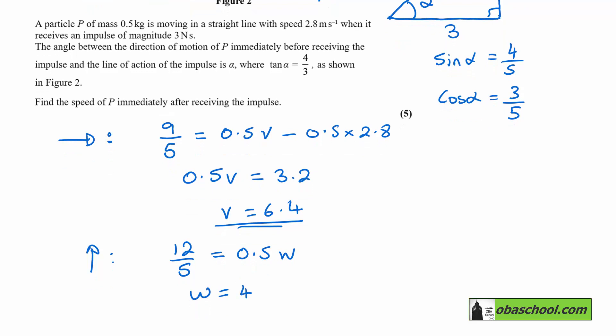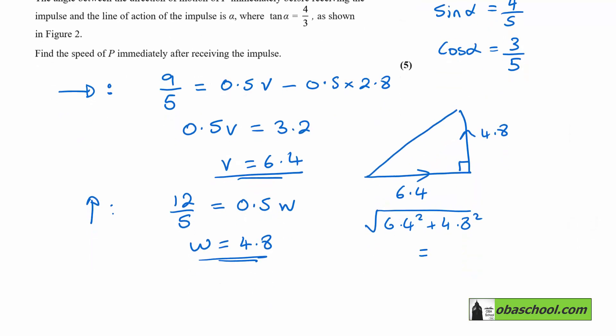And we want the speed. So we can see that it is going to be 6.4 horizontal, 4.8 this way. This is a right angle triangle, and so we just need to use Pythagoras' theorem. It's going to be the square root of 6.4 squared plus 4.8 squared, and that gives us an answer of 8 meters per second.